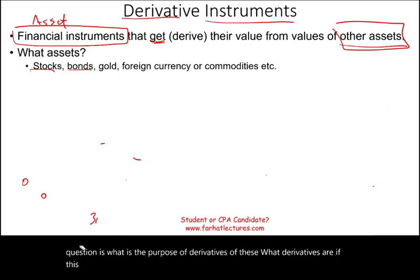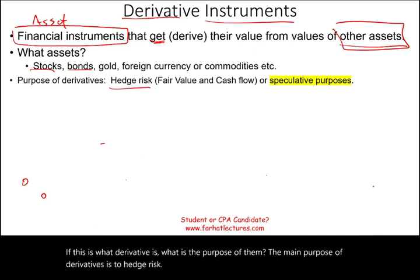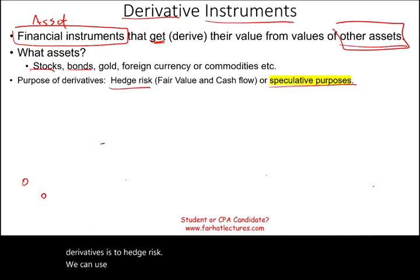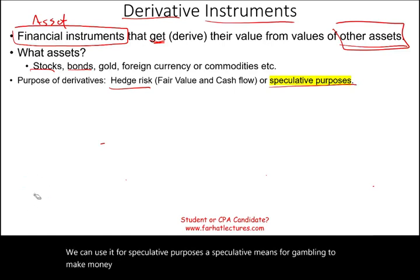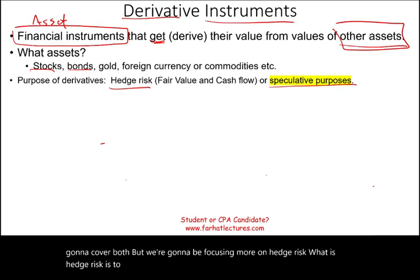The main purpose of derivatives is to hedge risk. We can also use them for speculative purposes — essentially gambling to make money quickly. We're going to cover both, but we'll focus more on hedging risk.